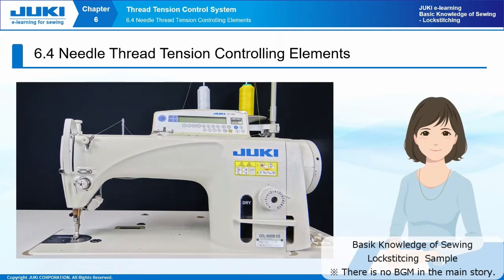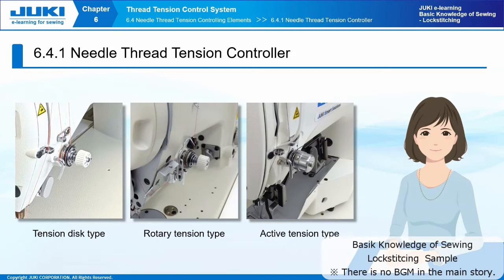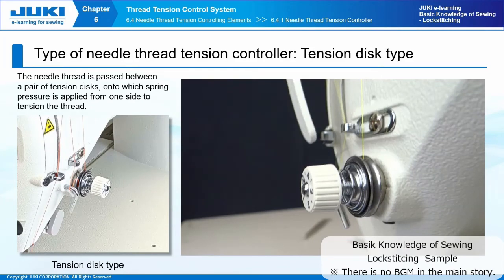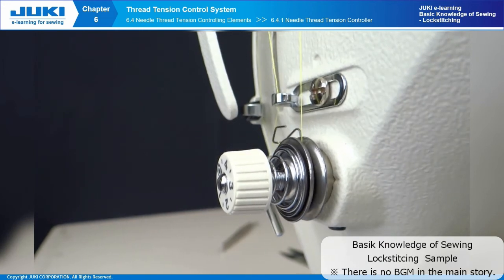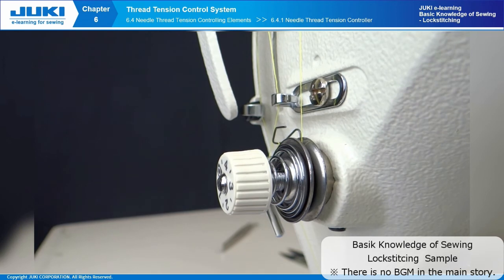Section 6.4: Needle thread tension controlling elements. This section explains about machine elements that control needle thread tension. There are three types of needle thread tension controllers: tension disc type, rotary tension type, and active tension type. The tension disc type is the most widely used. It has the needle thread passed between a pair of tension discs onto which spring pressure is applied from one side to tension the thread. When the thread thickness changes, pressure on these tension discs will change accordingly to alter the needle thread tension.